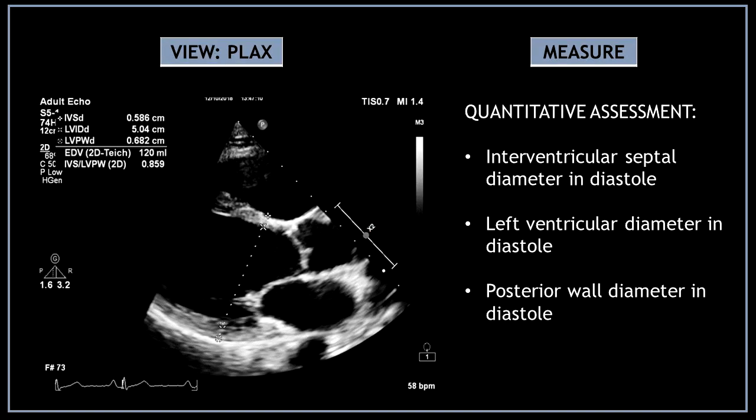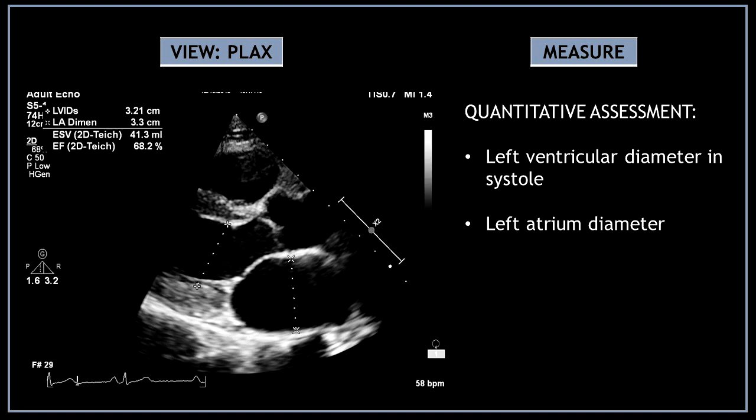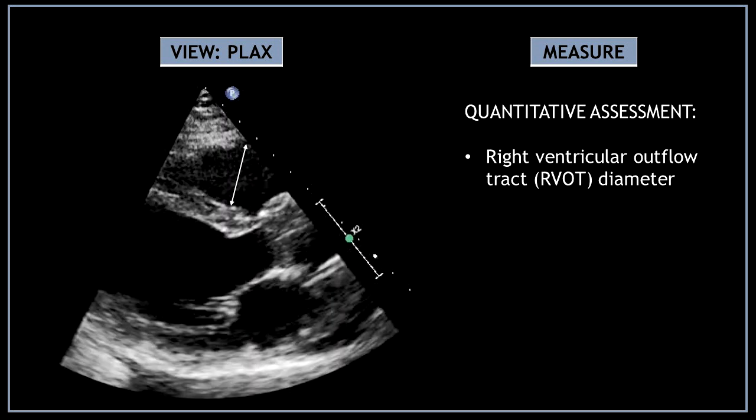Now let's move to some quantitative assessment. Freeze the image at end-diastole to measure: interventricular septal diameter in diastole, left ventricular diameter in diastole, and posterior wall diameter in diastole. Then freeze the image at end-systole to measure the left ventricular diameter in systole and the left atrium diameter. Also in diastole, measure the right ventricular outflow tract diameter.